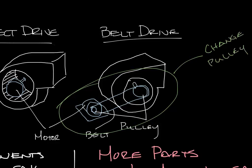So by changing the size of the pulleys, you can change how fast the fan rotates at any given motor speed and therefore the airflow. So now let's look at the equation for that.